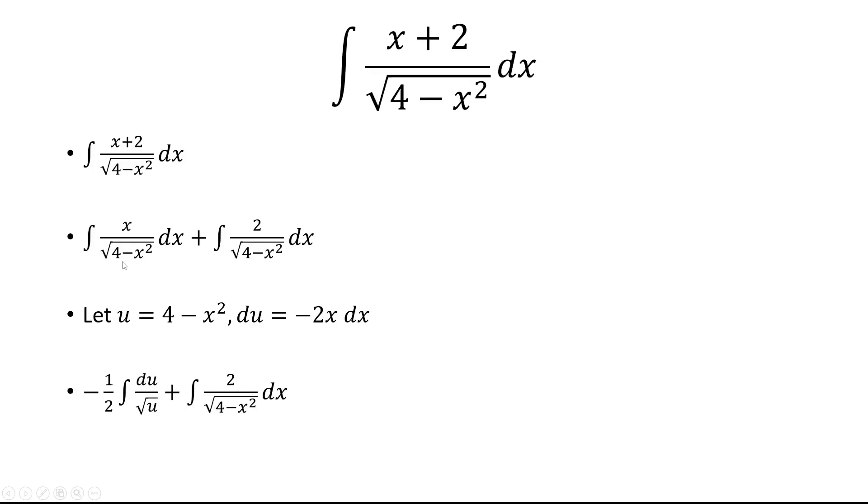In the denominator, we have the square root of u, which we're going to bring up as u to the negative 1 half power. Integrating u to negative 1 half is 2u to the 1 half. The twos are going to cancel, and we're left with negative u to the 1 half power.